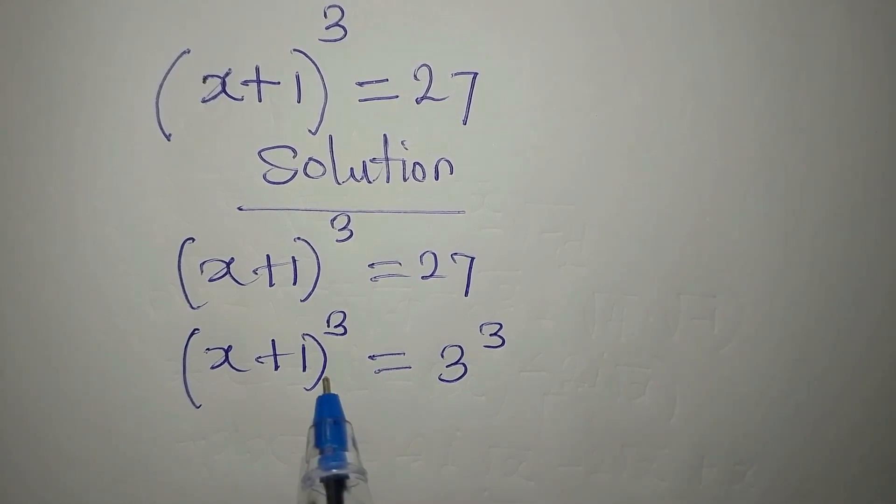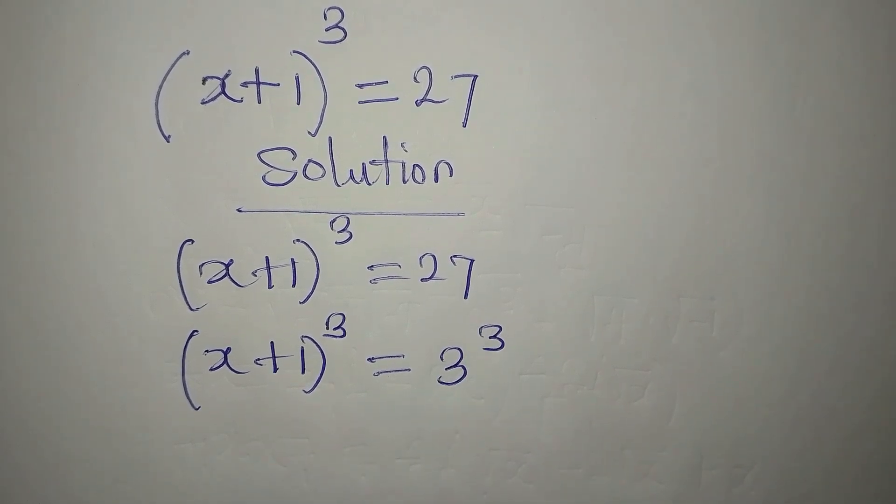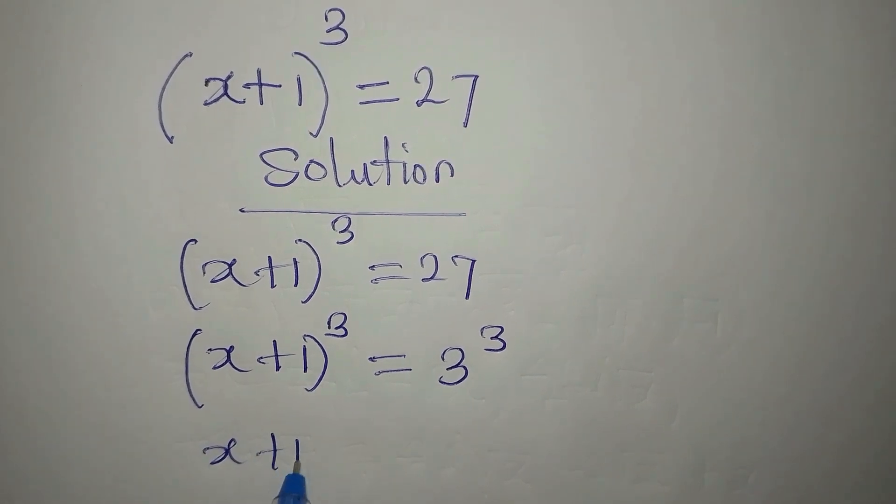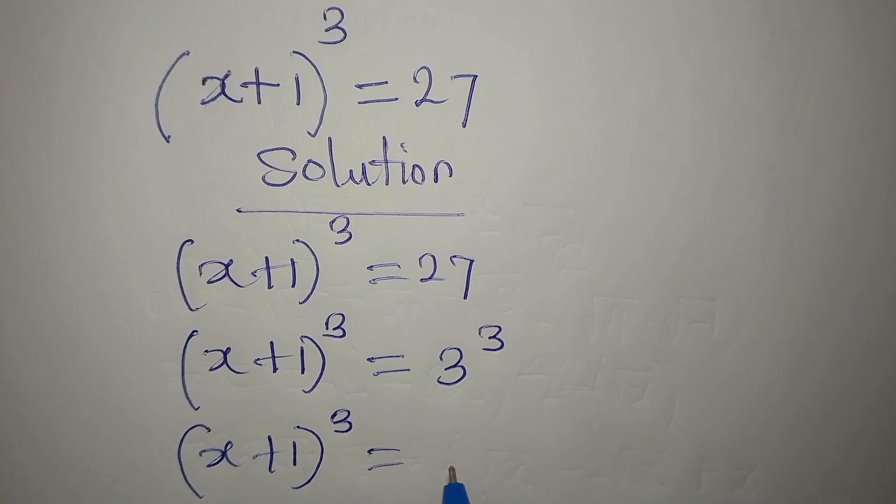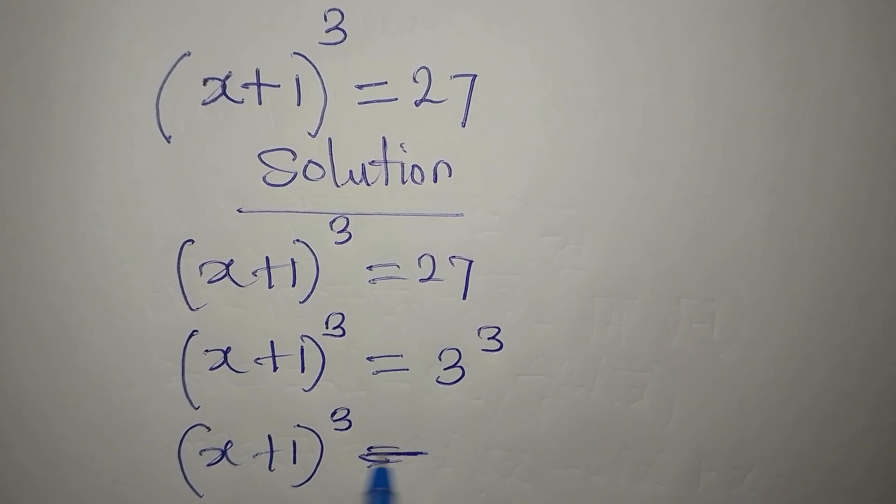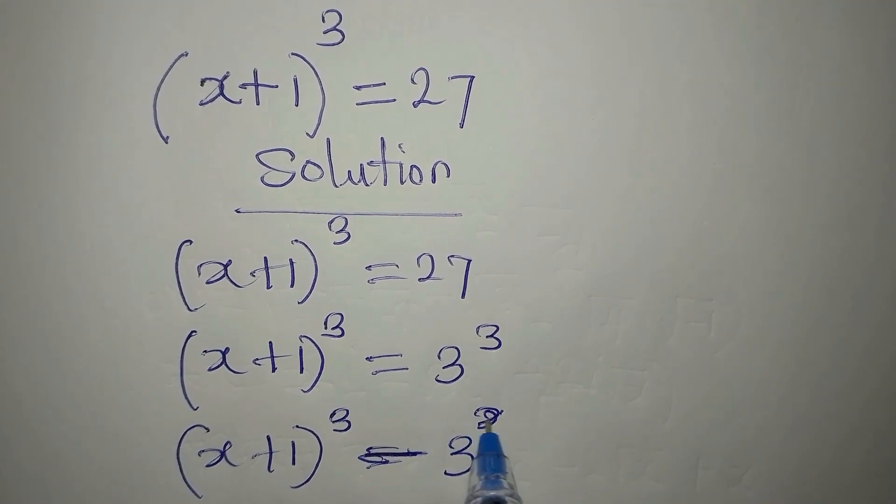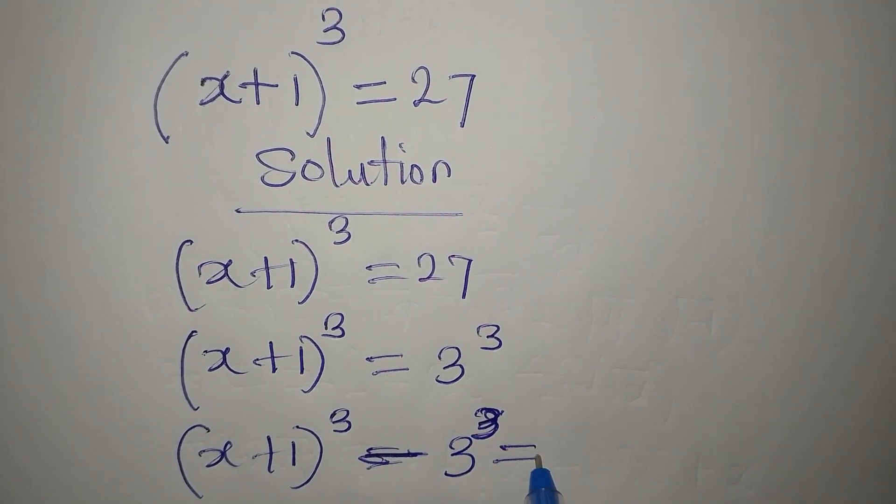So what do I do? Take this to the left. So we have x plus 1 to the power of 3 minus 3 to the power of 3, and this is equal to 0.